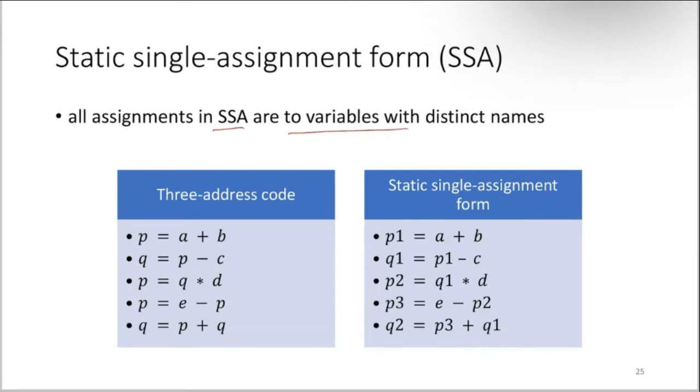When you write three-address code, you can see here p = a + b, then we use this p in this line. Q is a new variable here.